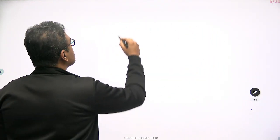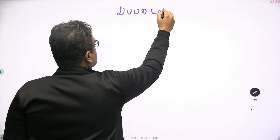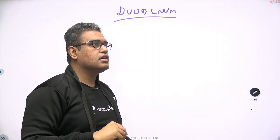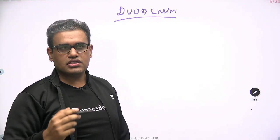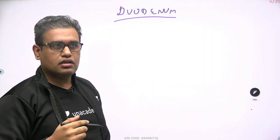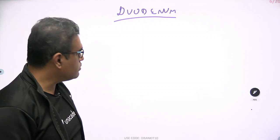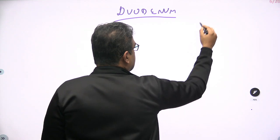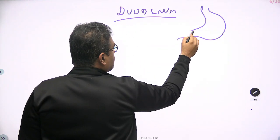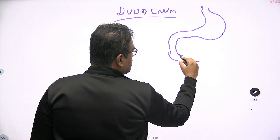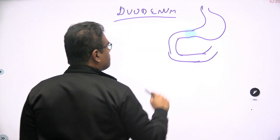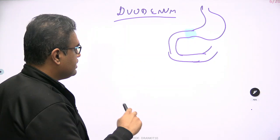The topic of discussion today is the duodenum. What are the features of duodenum we need to know while solving MCQs? First, duodenum is mainly retroperitoneal, and a small part of it is intraperitoneal — the initial part, which is connected to the liver via the lesser omentum, specifically the hepatoduodenal part. So duodenum is a C-shaped, mainly retroperitoneal structure. It starts where the stomach ends, with four parts: first, second, third, and fourth. Only the small initial half of the first part is intraperitoneal; all other parts are retroperitoneal.